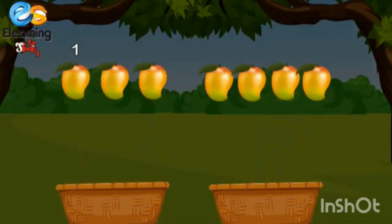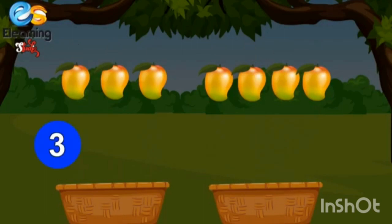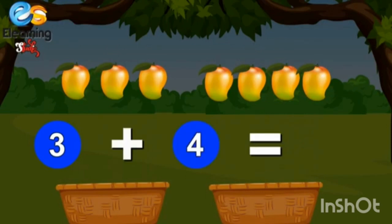Three mangoes add four more mangoes. One, two, three, four, five, six, seven. Seven mangoes. Three plus four is equal to seven.